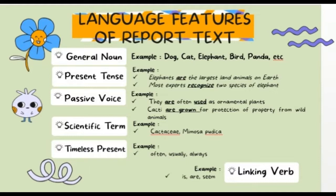Next example: 'Most experts recognize two species of elephant.' This is a verbal sentence because it uses verb form one — that is 'recognize'. Next, passive voice — for example: 'They are often used as ornamental plants.' And 'Cactus is grown for protection of properties from wild animals.' The formula of passive voice is: subject + to be (am/is/are) + past participle (verb 3).